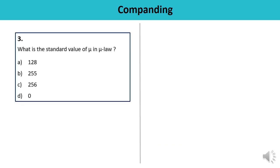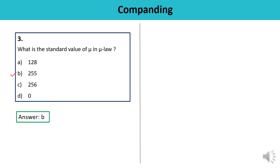Question number three: What is the standard value of Mu in Mu law? From the compressor characteristic for Mu law, where you have written the mathematical expression, the standard value is 255. You must be able to pick that answer very quickly. That is the correct one.